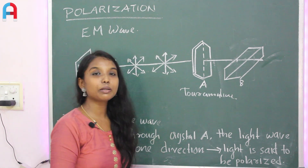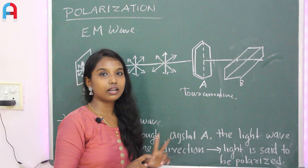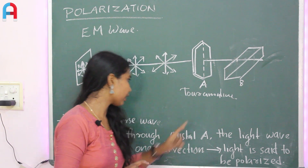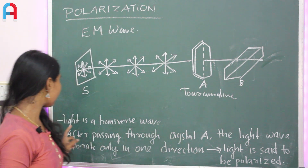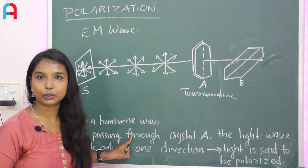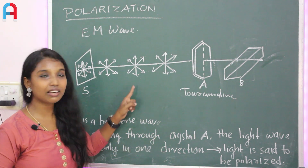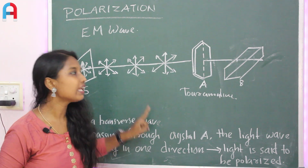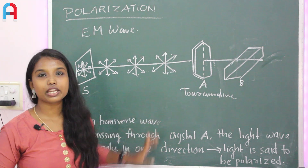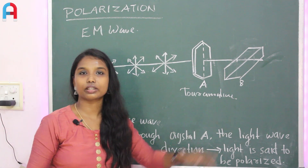From this, there are two conclusions. The first thing is that light is a transverse wave. If light were a longitudinal wave, rotating the crystal would not turn off the light.